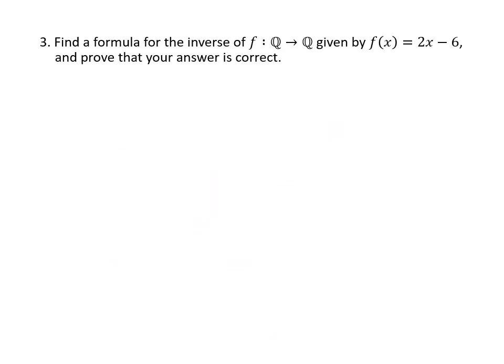Finally we have a question about inverse functions. We're given this function, the domain and the codomain are both Q, the set of rational numbers, and we have a formula f(x) = 2x - 6. So what we're looking for is a new function g, whose domain is the same as the codomain that f had, and whose codomain is the same as the domain of f. So in this case, it's still going to be from Q to Q.